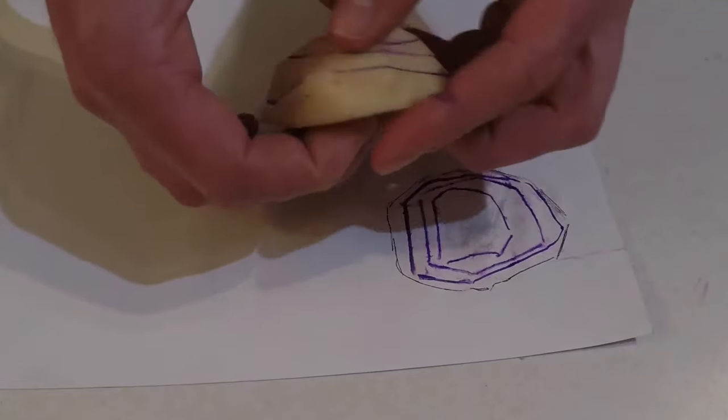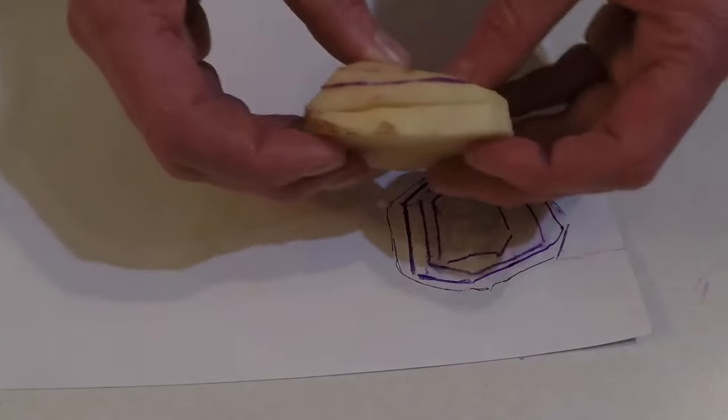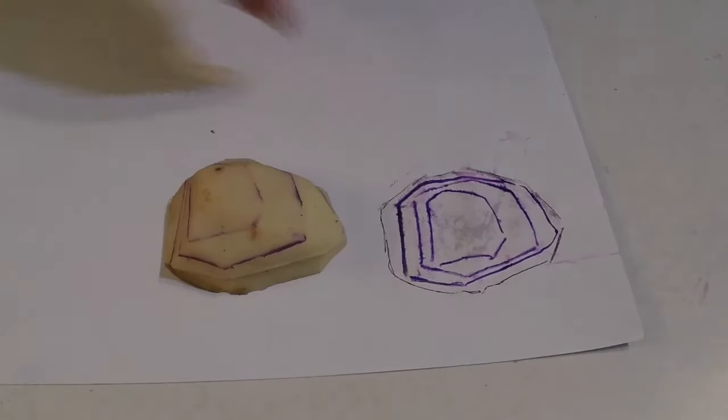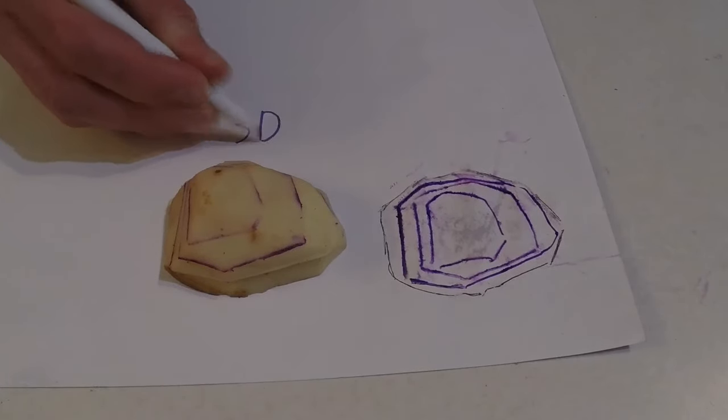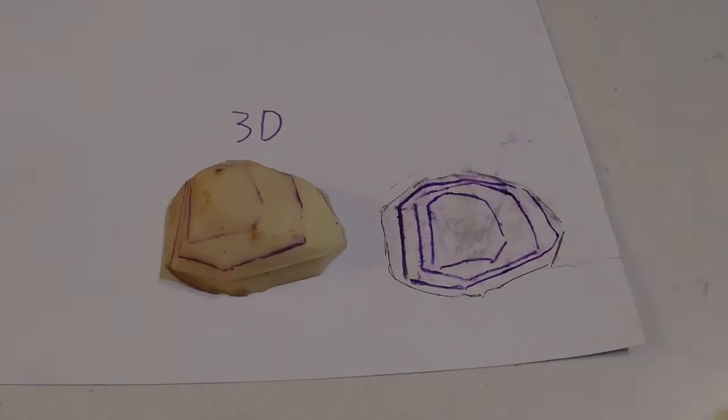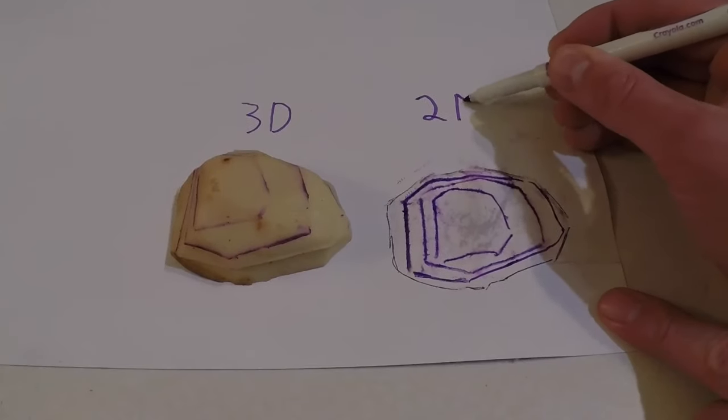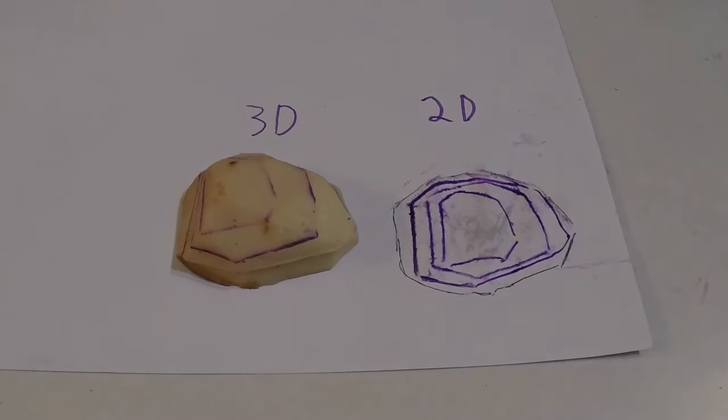Take a look at the topographic map that we created using the potato slices. Notice that the contour lines on the left hand side of the map are much closer together. This means that that side of the hill or mountain is much more steep. On the right hand side the lines are further apart which means that the slope is gentle.